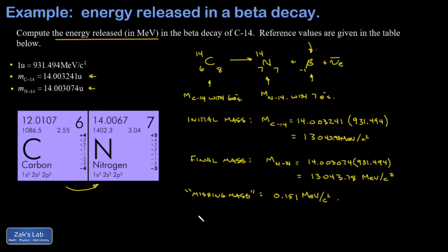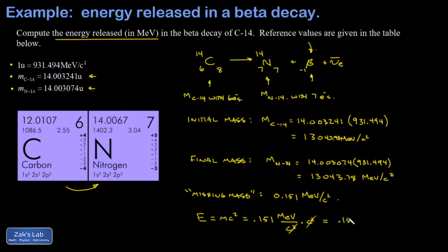To convert that missing mass to energy we use E equals mc squared. We love these units of MeV per c squared for mass because in this calculation the c squared cancels immediately: 0.151 MeV per c squared times c squared gives an energy released of 0.151 MeV.